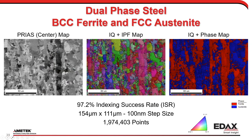A lot of people are now doing dual-phase steels with the Velocity. One of the things being released with OIM Analysis 8.6 is a parent grain reconstruction package. With the Velocity you can do very large areas and find retained parent phases, which gives you the information needed to reconstruct those grains. Dual-phase EBSD is no problem for the Velocity.